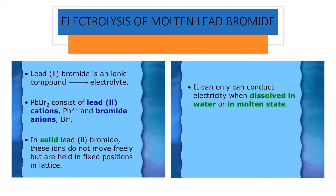Electrolysis of molten lead bromide. During electrolysis of lead bromide, the lead bromide is taken in the molten state as an electrolyte. Lead bromide consists of lead cation Pb2+ and bromide as an anion Br-.